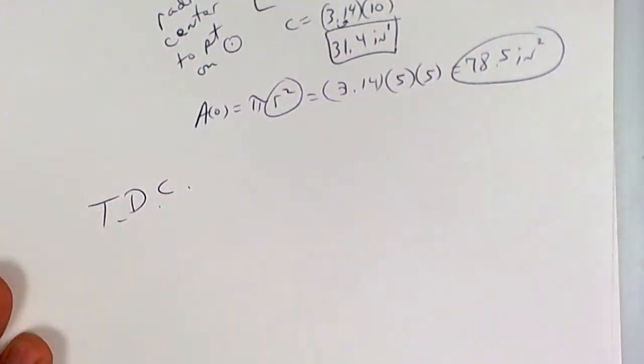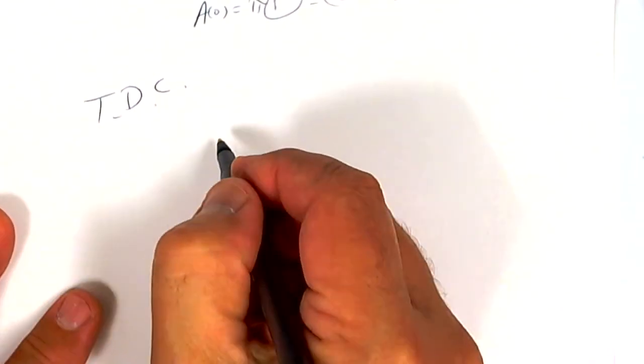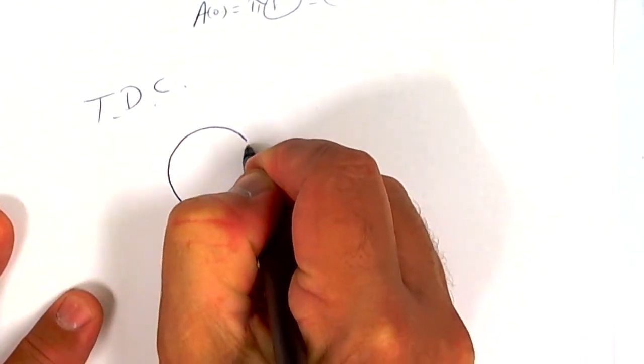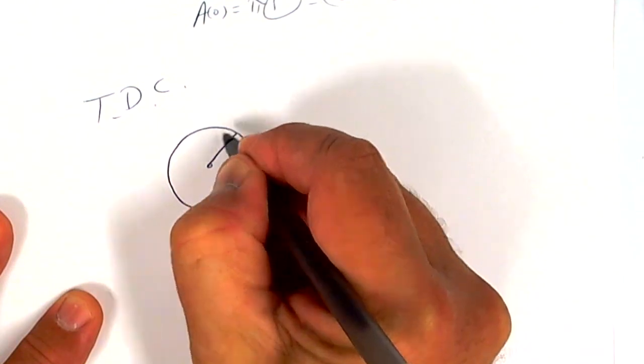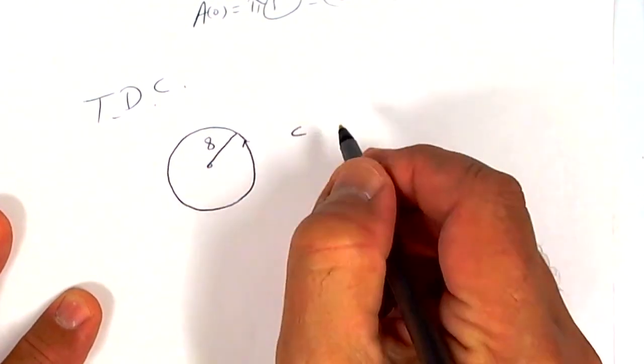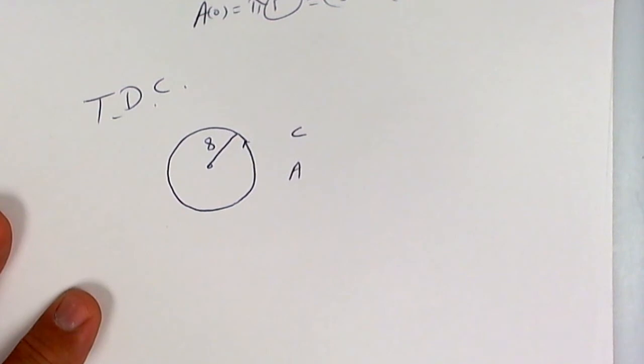Draw a circle and I'm going to tell you the radius is 8. I want circumference and I want area. Go ahead and try that right now.